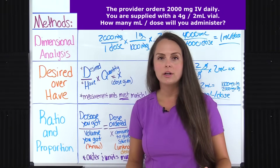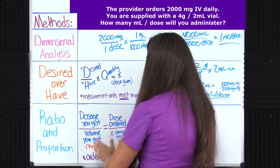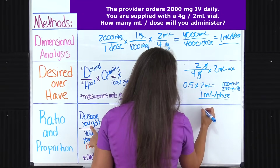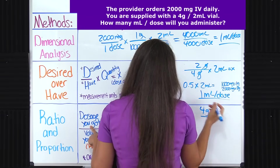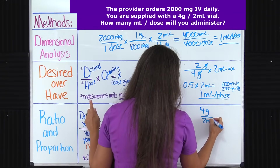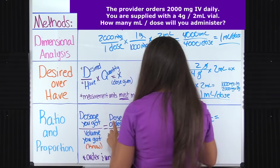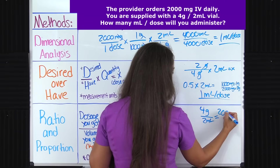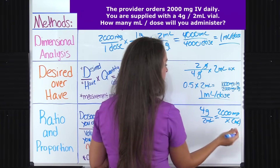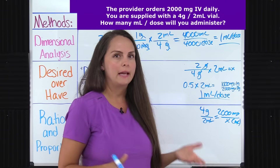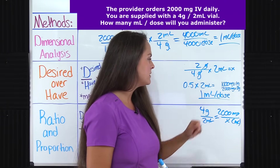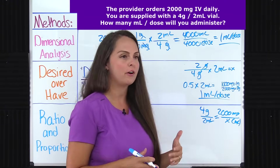Okay, the first ratio we're creating is our known ratio — this is what we know, what we have on hand. The dosage we have is four grams, and that is over the volume we have, which is two milliliters, because for every four grams we're given two milliliters. That should be equal to the dose ordered, which is 2000 milligrams, over X. Let's do a quick check before we cross multiply. Milliliters and milliliters look good. But grams and milligrams — that's not right. We need to do some converting.